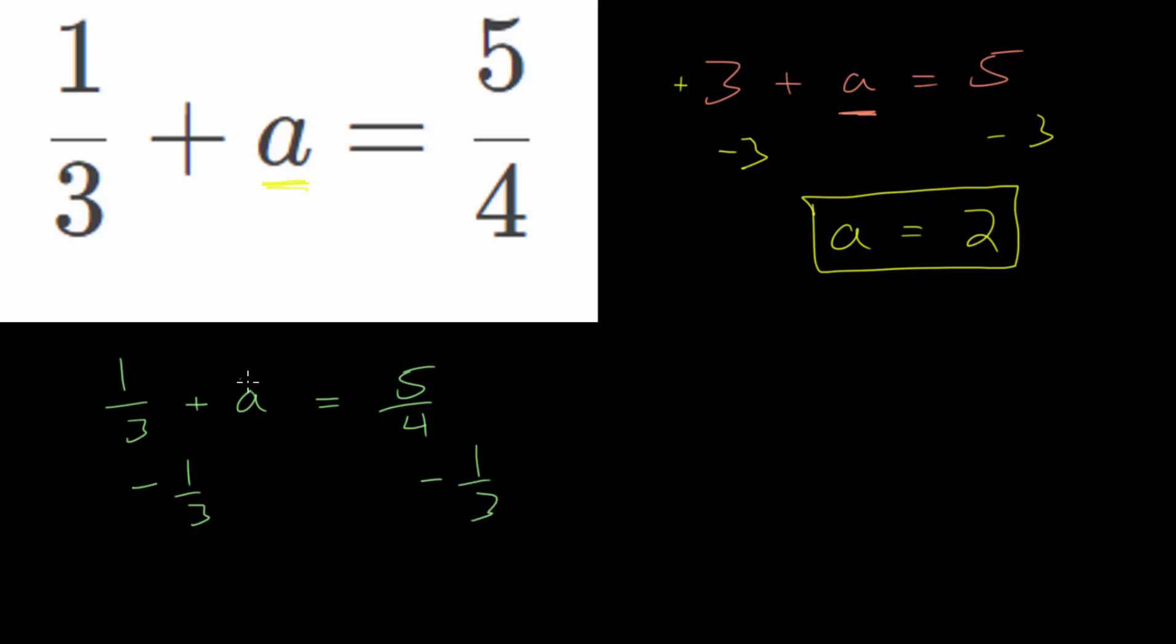then on the left-hand side, we'll just be left with a. Since 1/3 minus 1/3 is 0, so we get a is 5/4 minus 1/3.